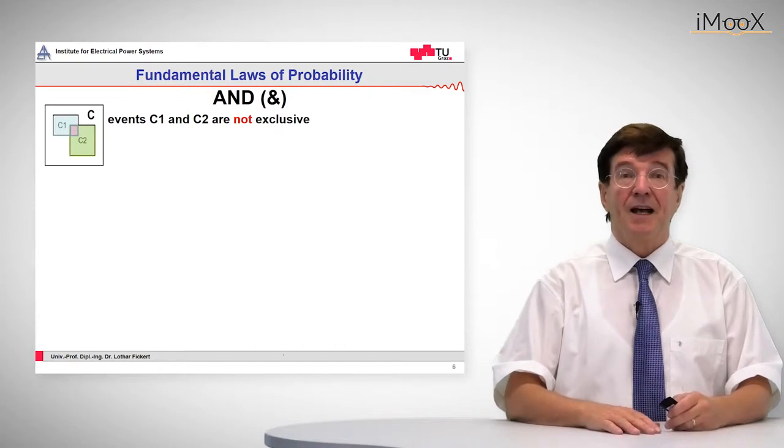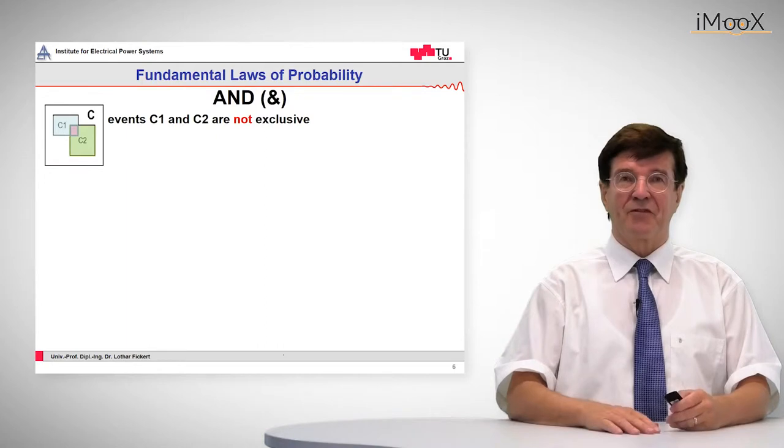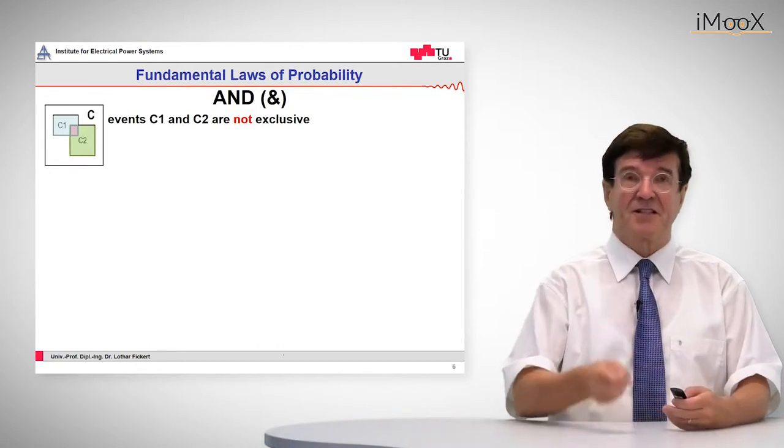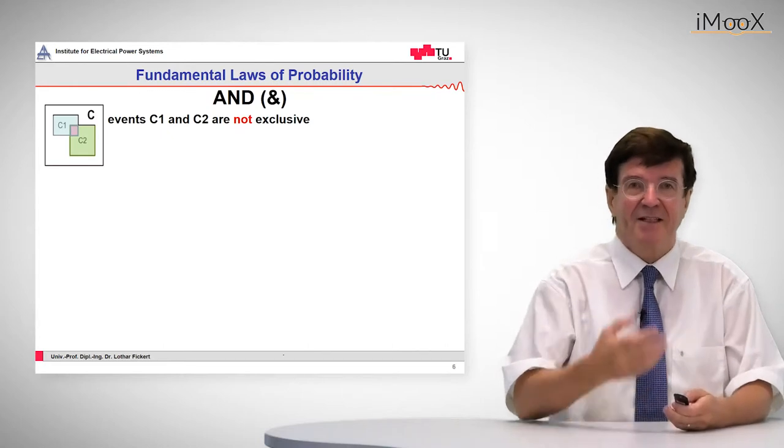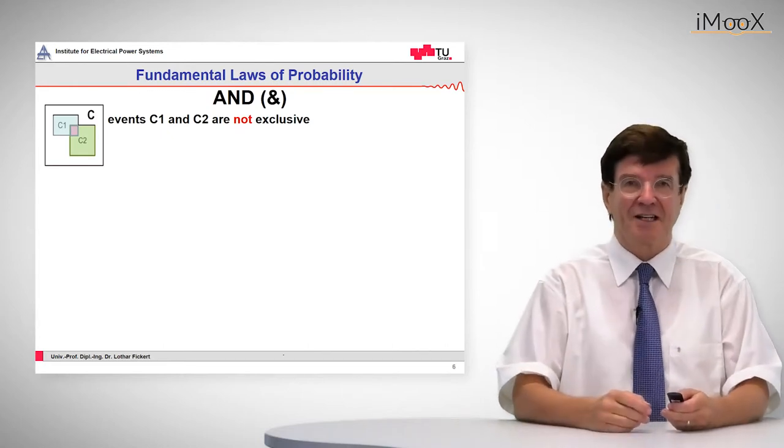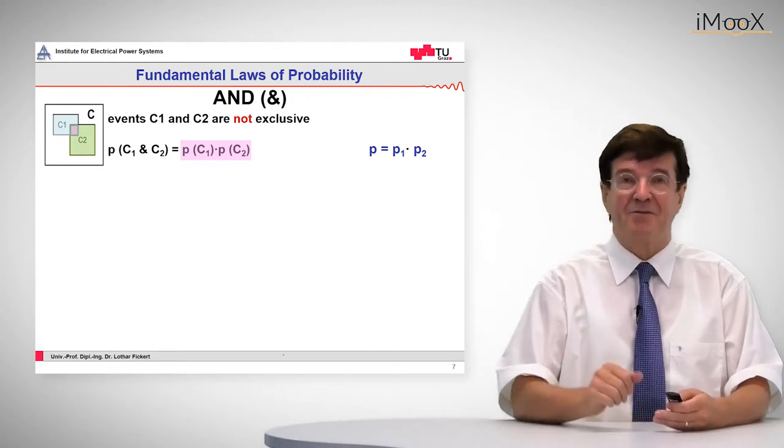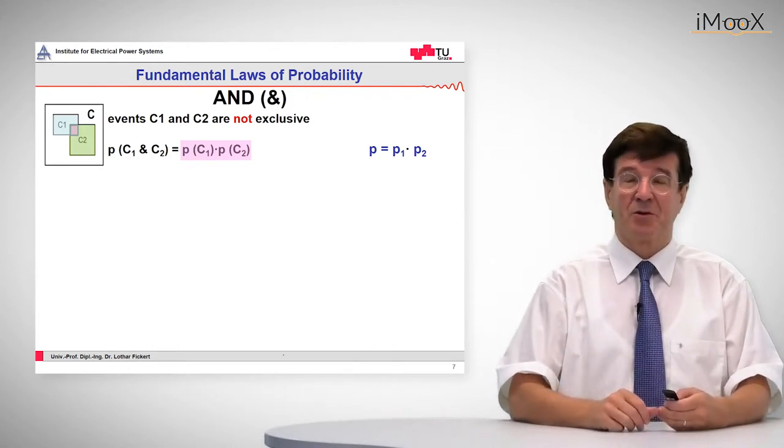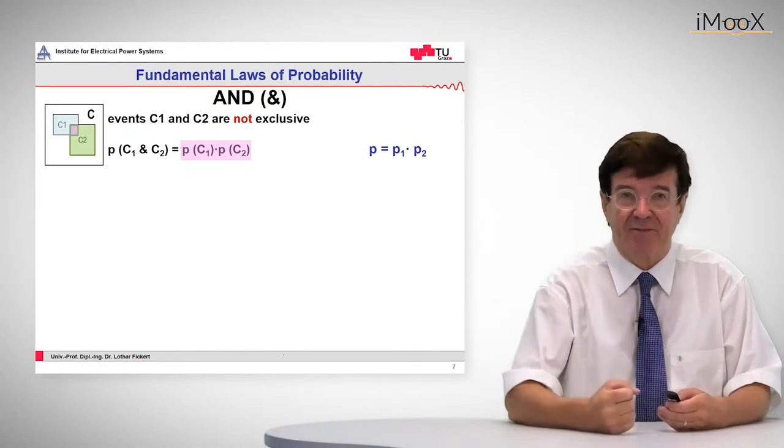The AND law is applied if the event that we are looking for consists of two sub-events that must appear at the same time. If these events are non-exclusive, then the product of p1 times p2 gives the probability that both events occur at the same time.